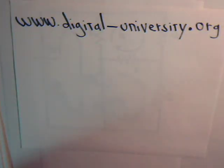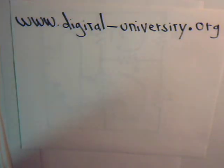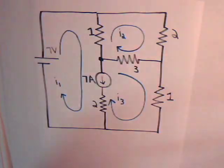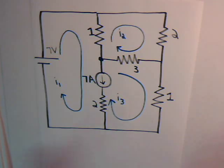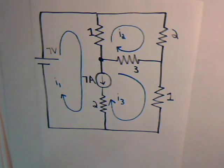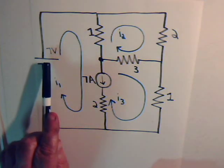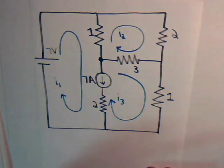This is video number 19 from digital-university.org. In this video we want to consider electrical circuits that have a current source and a voltage source, and introduce the method of super mesh current analysis. The circuit we want to consider is actually a modification of a problem solved in one of the earlier videos. If you remove this current source, it would be identical to one of our first problems solved using mesh current analysis. Now we want to see how we analyze it when we also have this current source in the circuit.